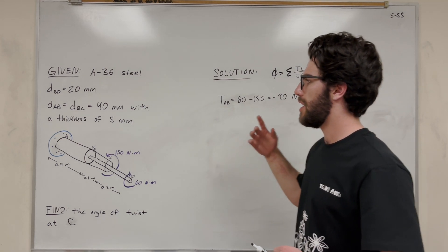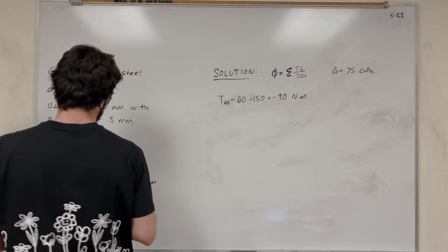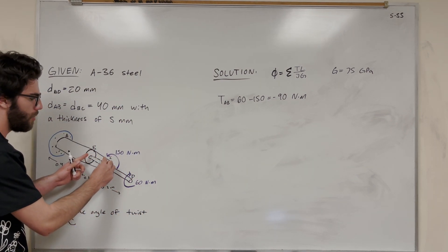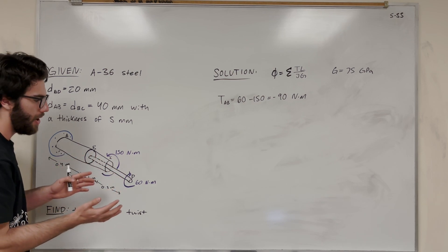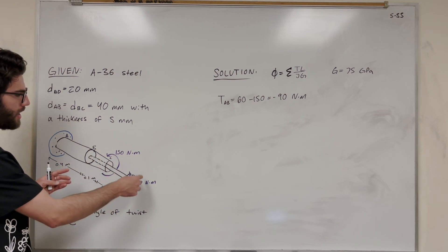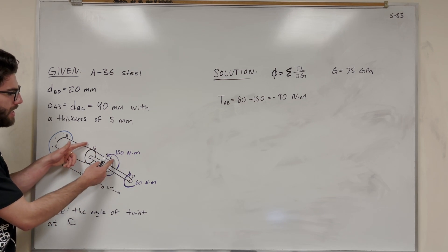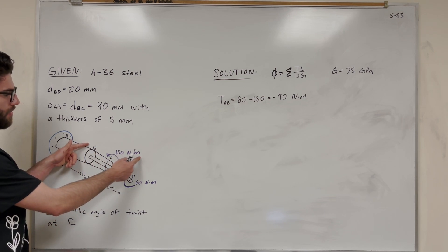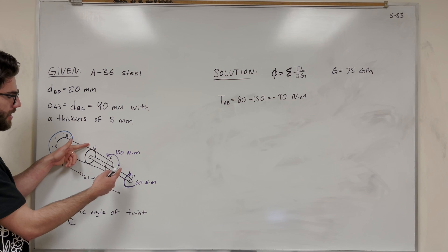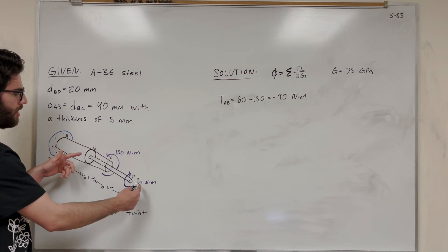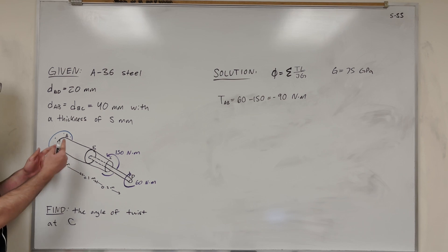Then we're finding the angle of twist of C. If we look at rod BD, or this thin rod, if that gets twisted it doesn't make a difference on what happens at C. So we're not going to worry about BD, only the torque that gets applied at the end of it. The only torque acting on BC now is this 150 Nm force going clockwise.